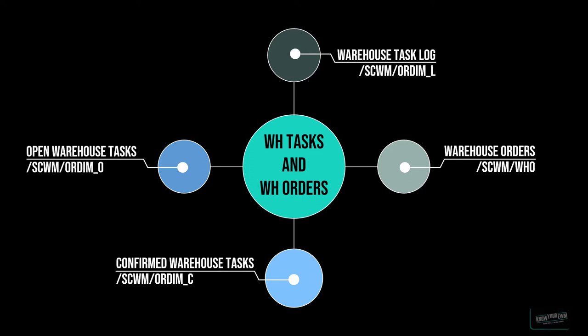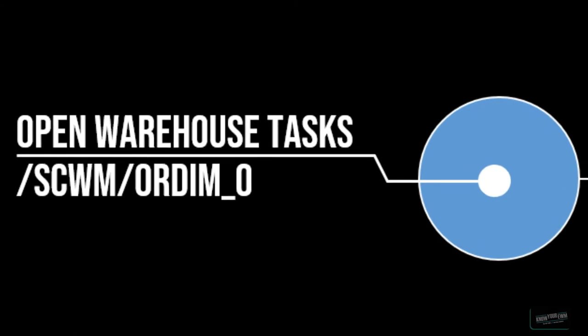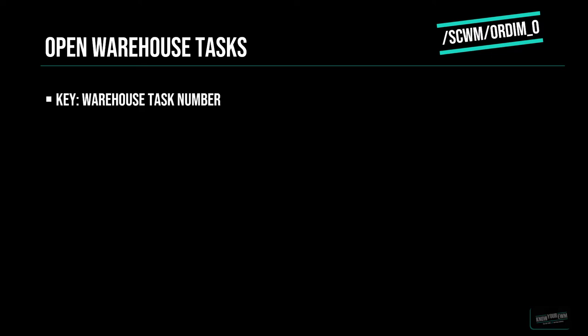We are going to start with the Warehouse Tasks first. The first table is obviously the database table for Open Warehouse Tasks. This table holds all information of an Open Warehouse Task. Since EWM behaves differently than older Warehouse Management Systems, the tasks are separated into different tables depending on whether they are open or confirmed, and do not have one single status in one specific table. The key of the Open Warehouse Tasks table, besides the Warehouse Number, is the Warehouse Task Number.